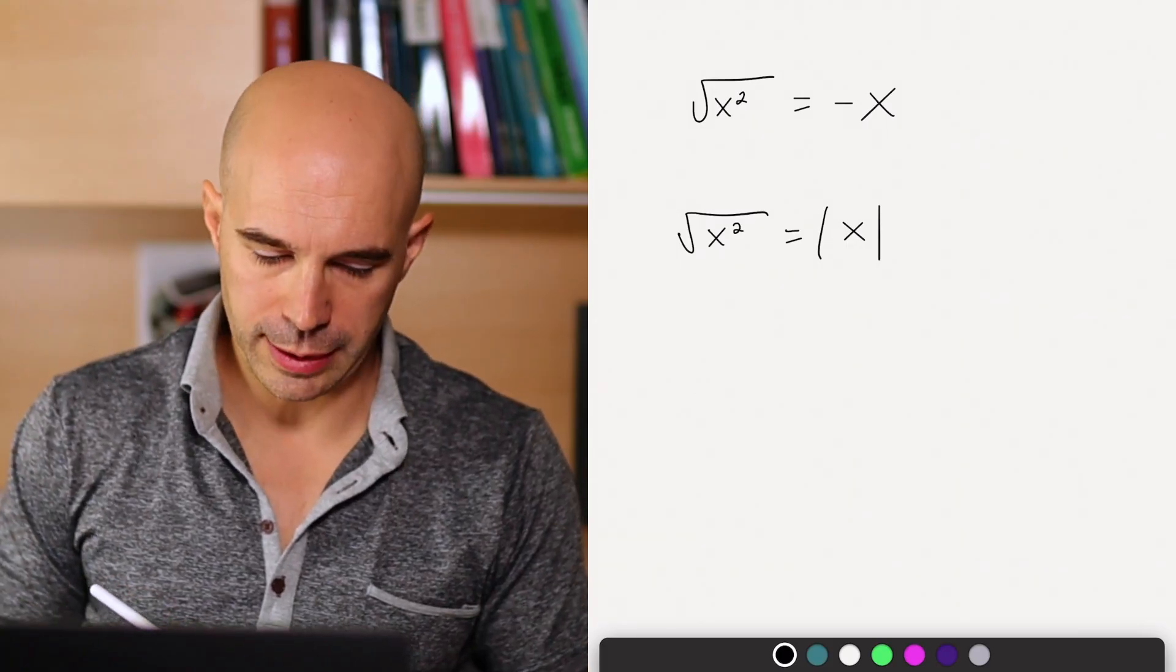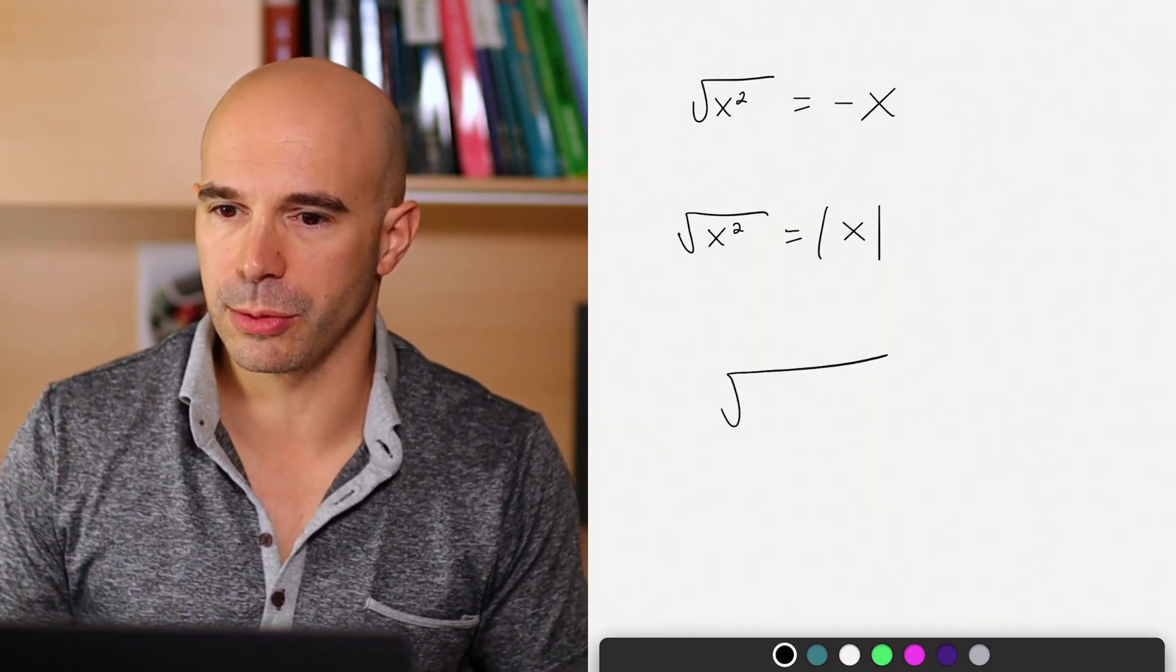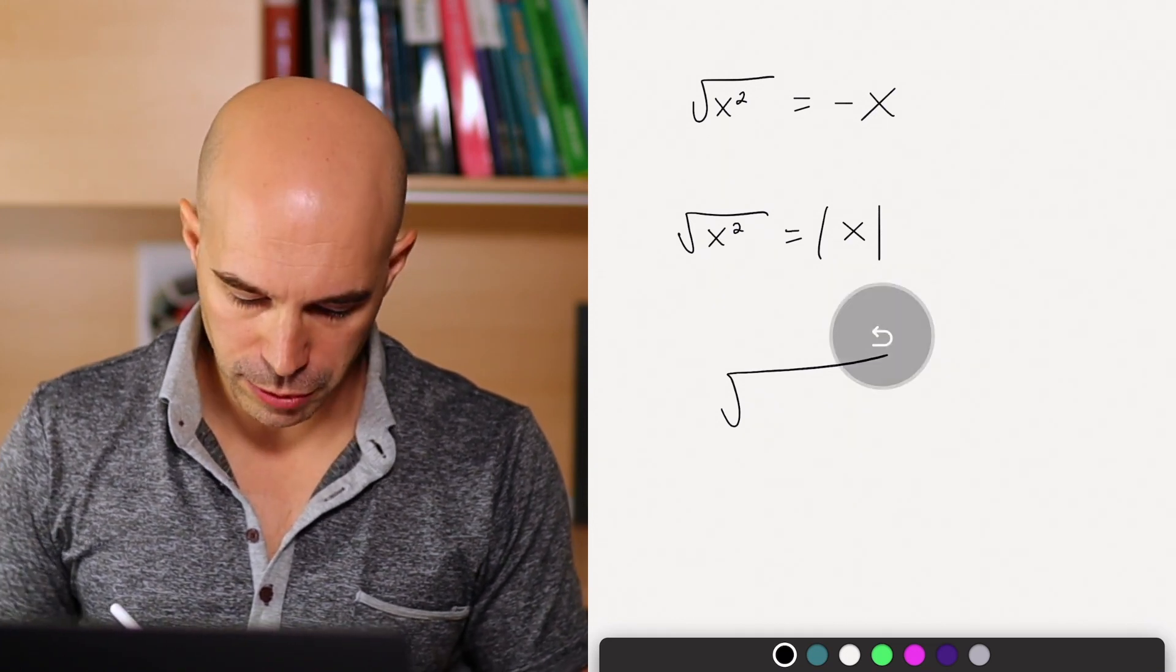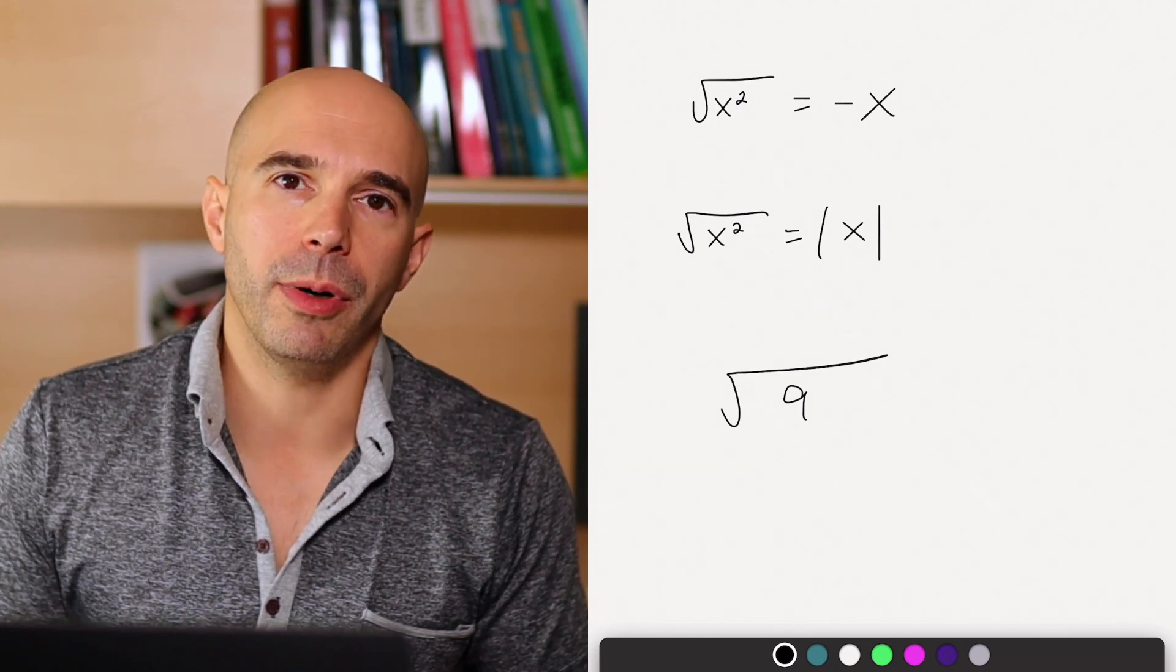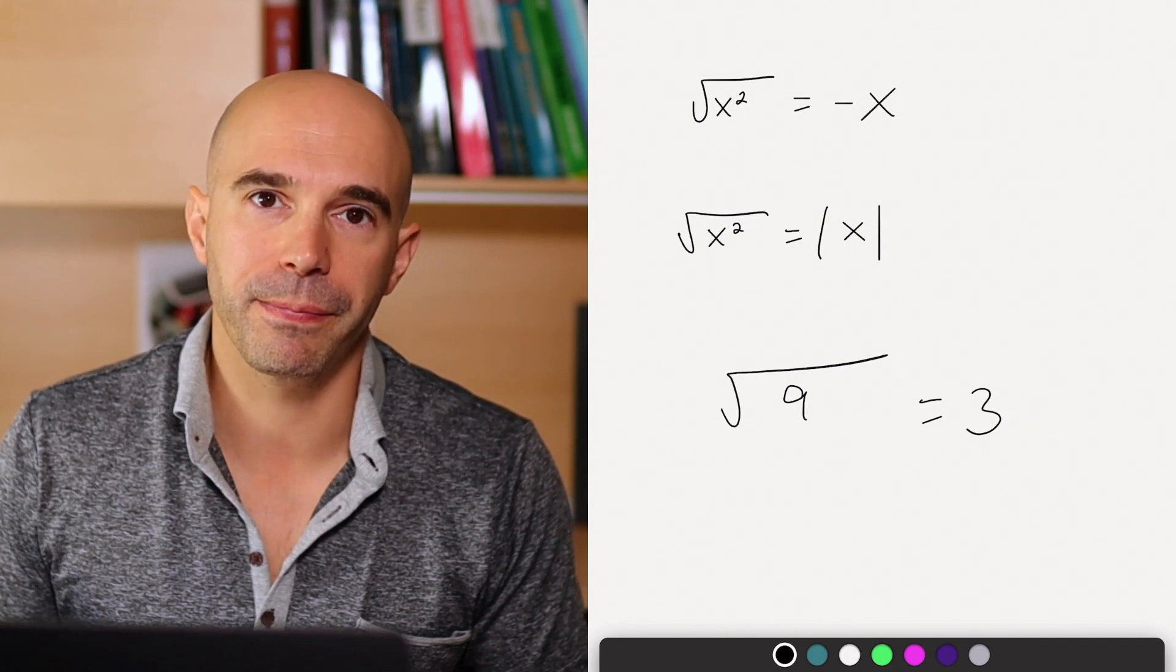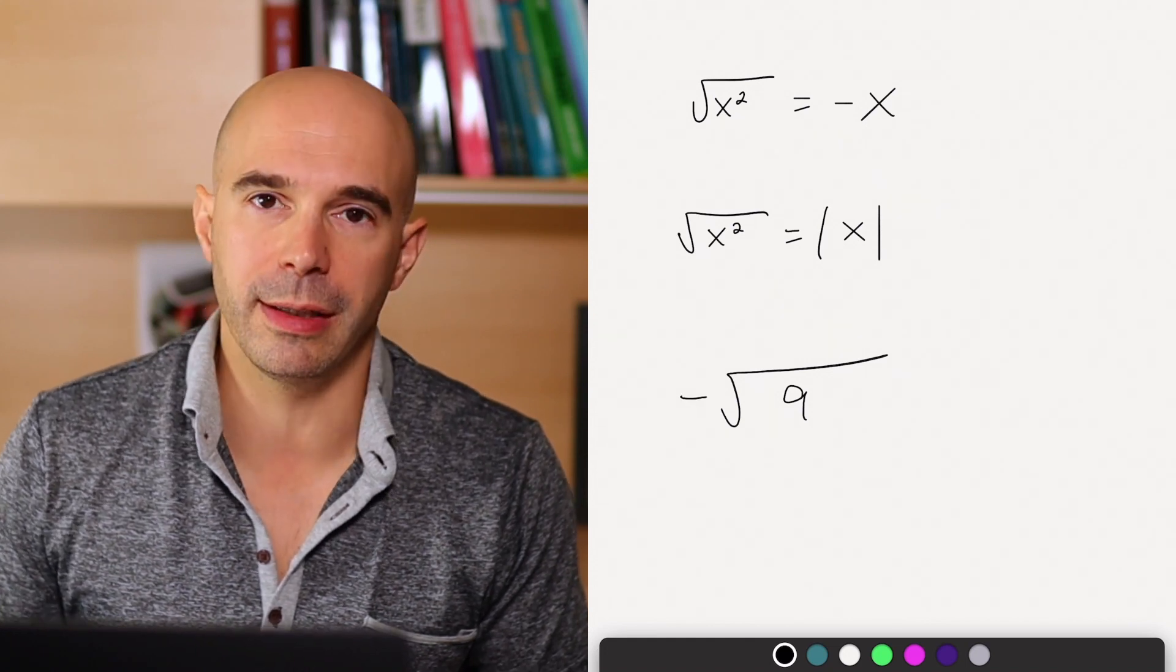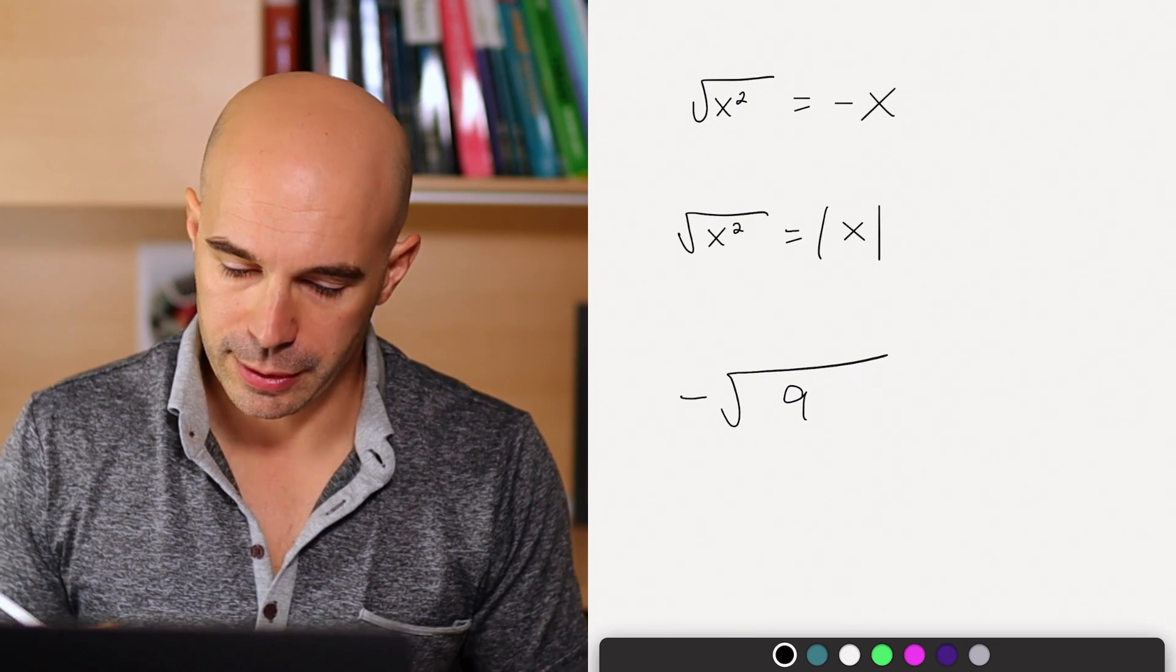The first thing we should note is that when the GMAT gives us a root, so we're looking at the bottom of my whiteboard now. I just created a root. When the GMAT gives us that root, for example a root 9, it always means the positive root. So this would be exactly equal to 3. It is definitely not negative 3.